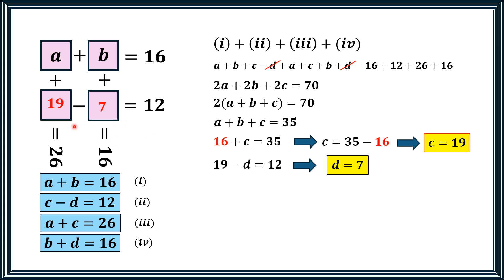Now again it is very easy. A plus 19 is equal to 26, so from here if we solve for a, we will get a is equal to 7, and here we replace a by 7.